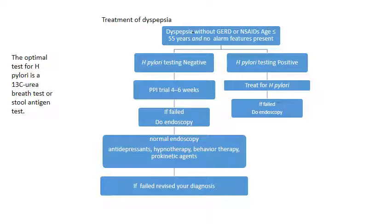If H. pylori testing is negative, give a proton pump inhibitor (PPI) for 4–6 weeks. If that fails, do endoscopy. If the endoscopy is normal, consider antidepressants, psychotherapy, behavioral therapy, and pro-kinetic agents. If those fail, revise your diagnosis. The detailed medication will be discussed in the next few slides.